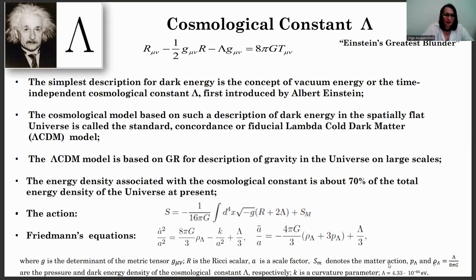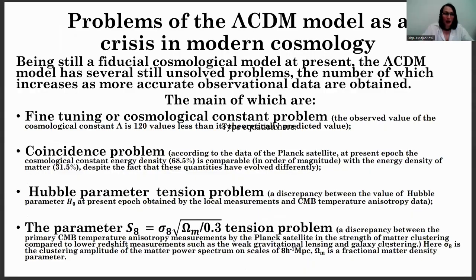The cosmological model based on such a description of dark energy in a spatially flat universe is called the standard concordance or fiducial lambda cold dark matter, lambda CDM model. The lambda CDM model is based on general relativity for description of gravity in the universe on large scales. The energy density associated with the cosmological constant is about 70% of the total energy density in the universe at present. Being still a fiducial cosmological model at present, the lambda CDM model has several still unresolved problems, the number of which increases as more accurate observational data is obtained.